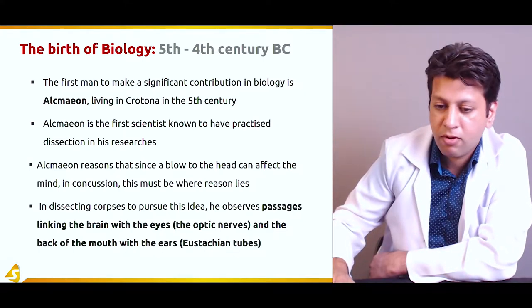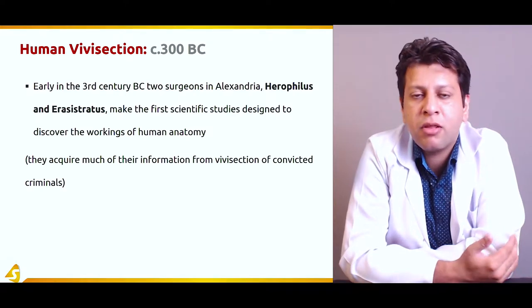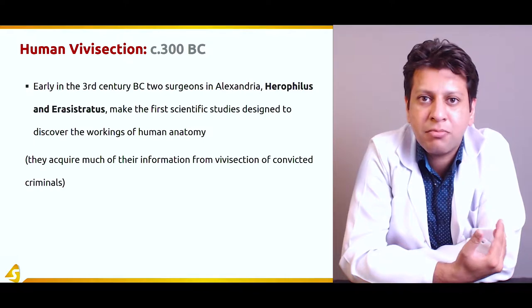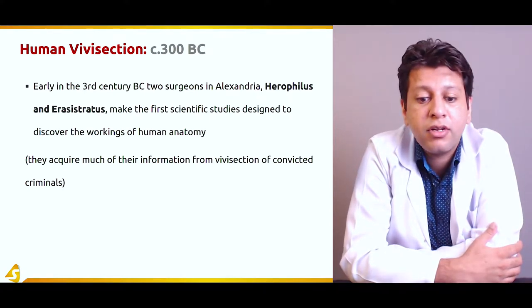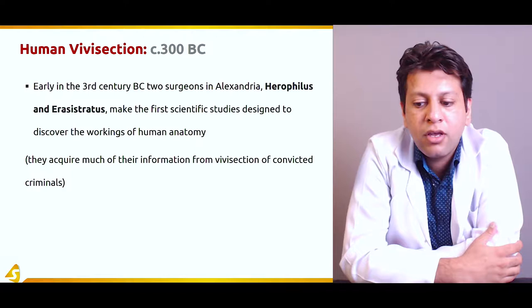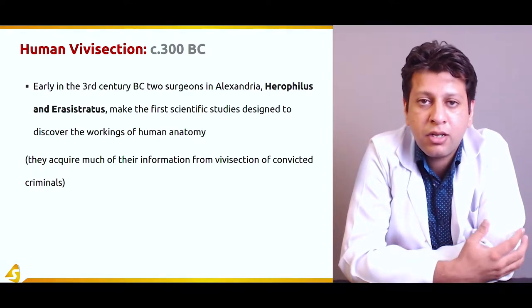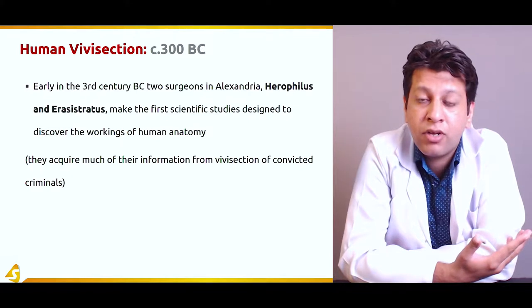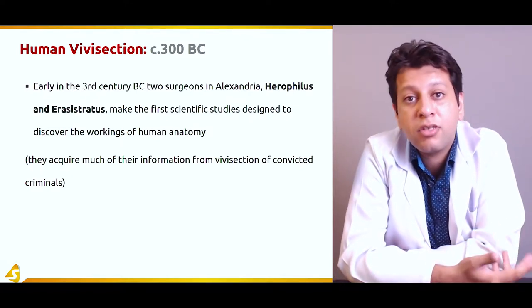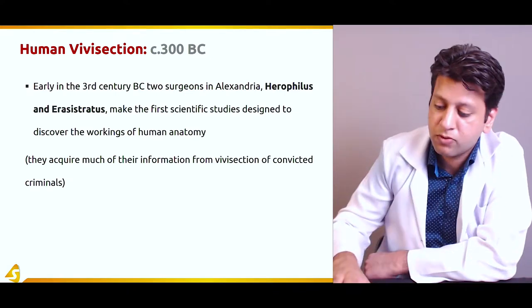In the early third century, surgeons in Alexandria — Herophilus and Erasistratus — made the first scientific study designed to discover the workings of human anatomy. At that time, Romans believed that in the afterlife you need the same body, so dissecting or opening a body was considered a serious crime. Therefore, dissections were only carried out on criminals who had been convicted.